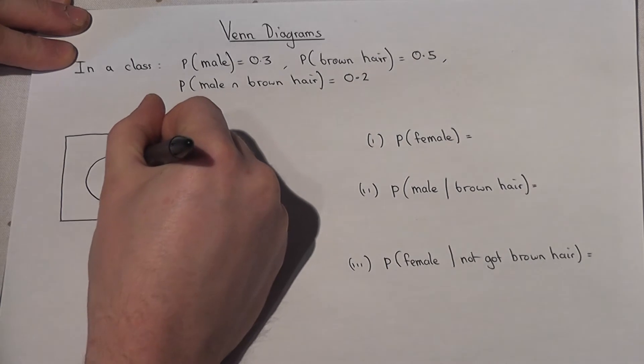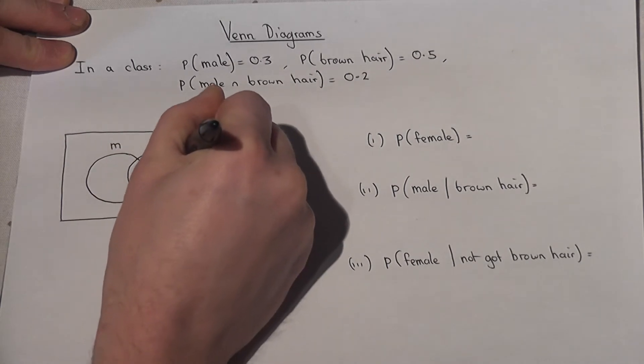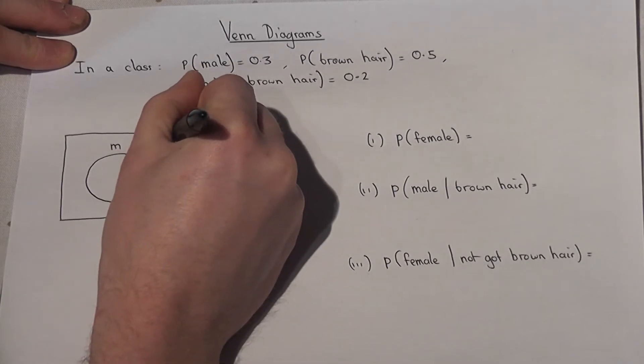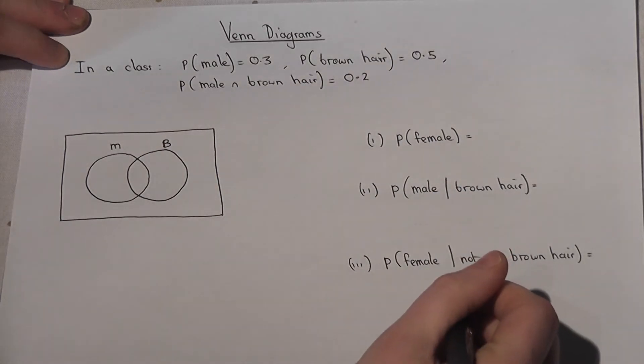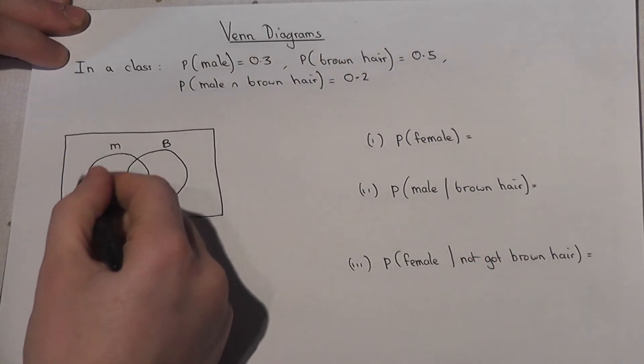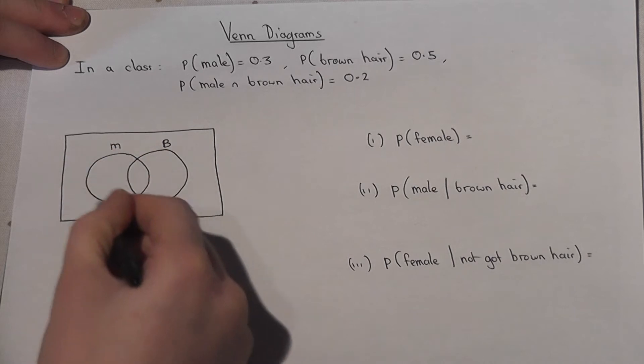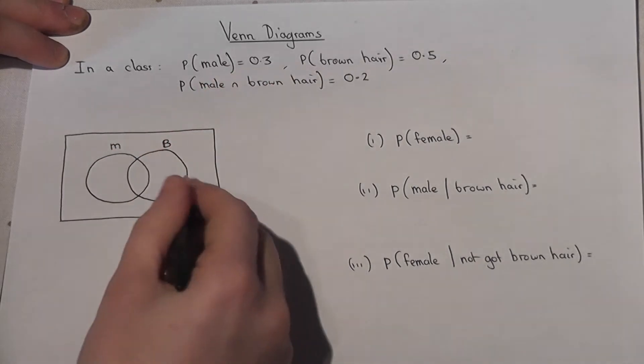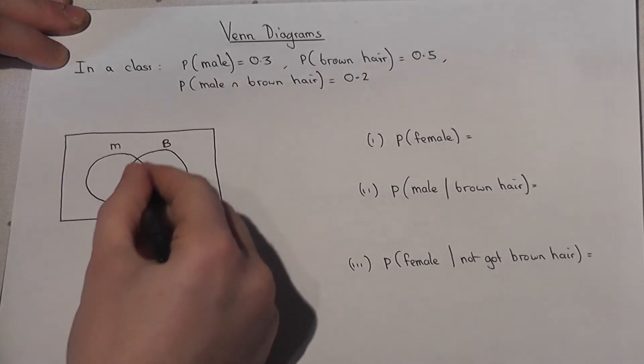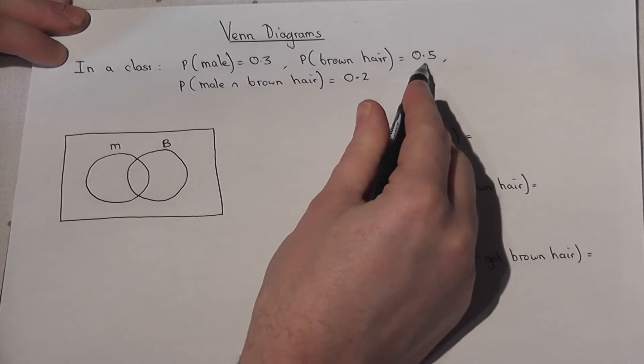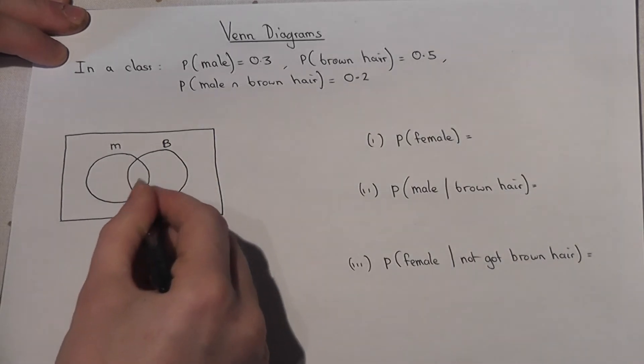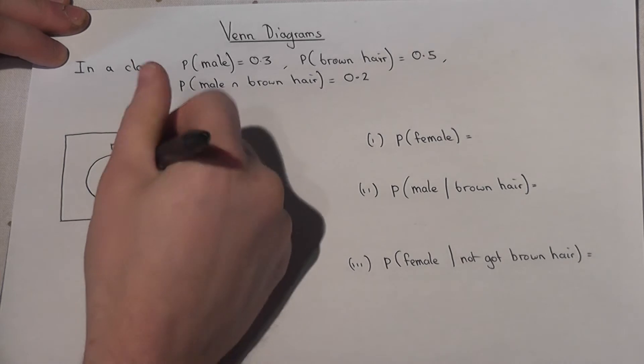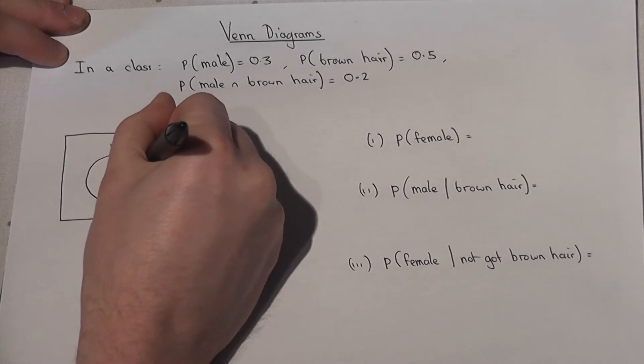Now this entire circle here represents the 0.3 and this entire circle here represents the 0.5. And the overlap are the males with brown hair, so that must be 0.2.